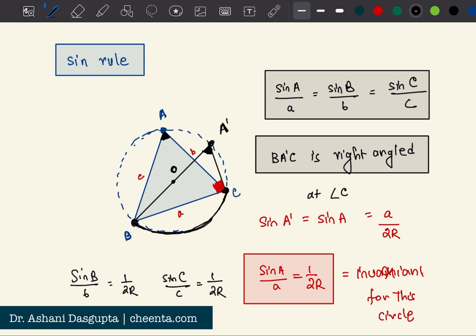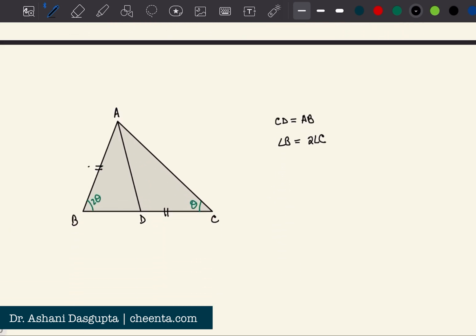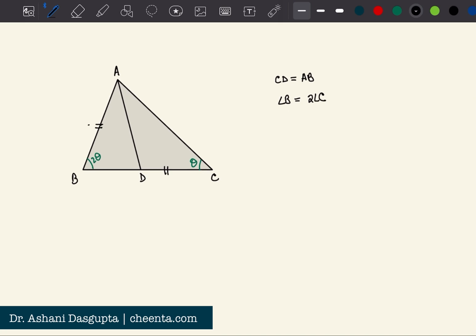Okay, so this is known as the sine rule and we will be using this to solve this problem. Let's try it - suppose this angle is alpha and this one is also alpha. Let's use the sine rule in this big triangle ABC.